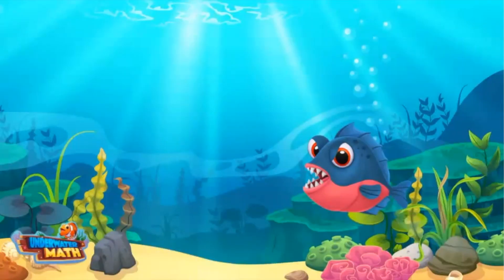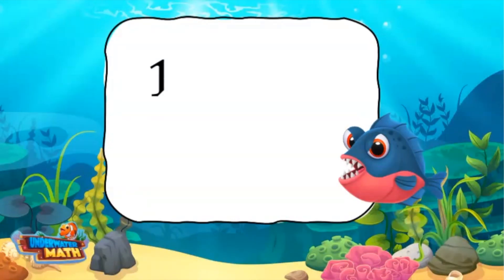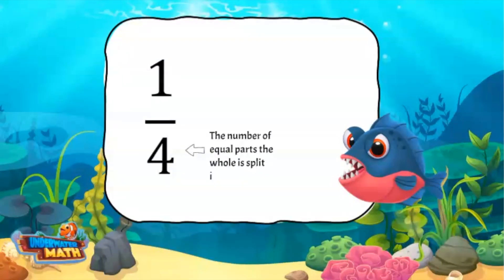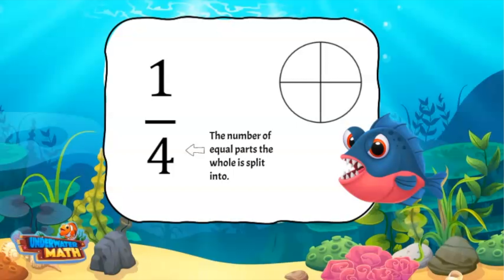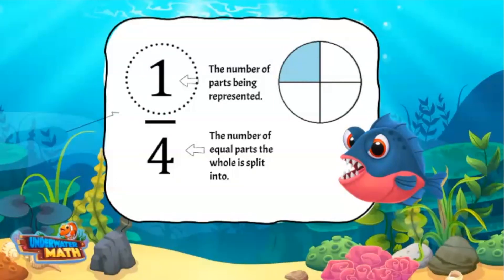Welcome! We are here today to discuss comparing unit fractions using models. As we know, a fraction represents a part of a whole. The denominator represents the number of parts the whole is split into and the numerator represents the number of parts being represented. When a fraction has a numerator of 1, it is called a unit fraction.